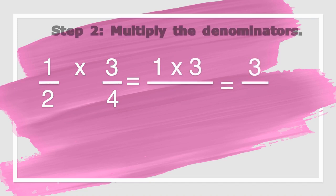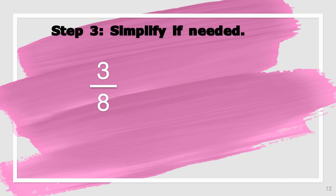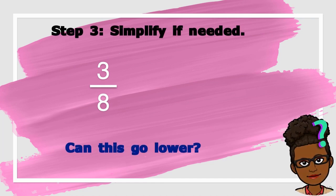Step two says multiply the denominators. When we do that, two times four is equal to eight. Now, our last step says to simplify if needed. And we already know that when we simplify, we're asking ourselves, can this go lower?